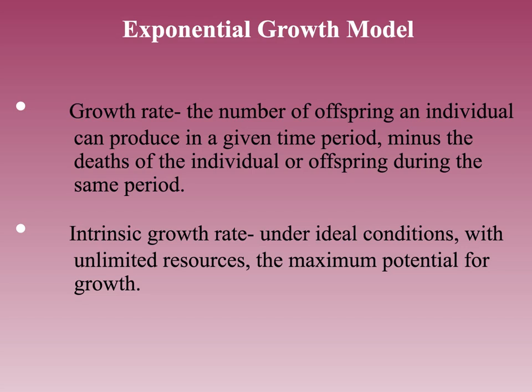Next we're looking at the exponential growth model. The growth model is the number of offspring an individual can produce in a given time period minus the deaths during the same time period. For a good growth rate, you need more births than deaths. Then you have the intrinsic growth rate — under ideal conditions with unlimited resources, the maximum potential for growth. There's a formula: Nt equals N₀ × e^(rt), where Nt is the future population, N₀ is current population, e is the natural log (approximately 2.72), t is time, and r is the intrinsic growth rate. Look at your book for this.